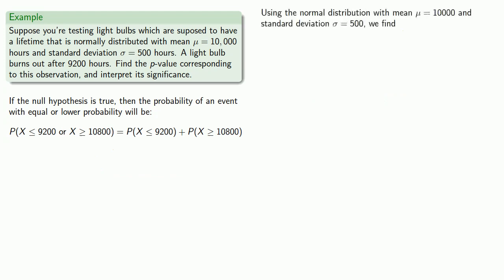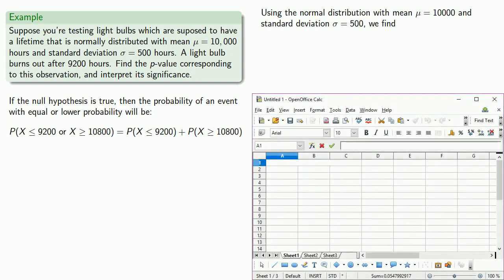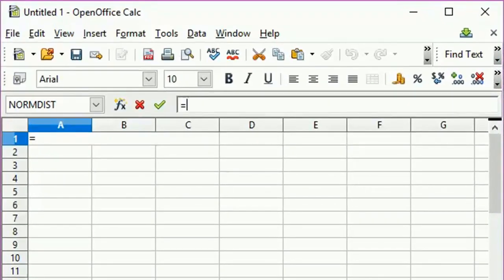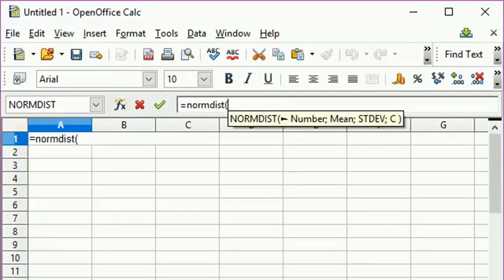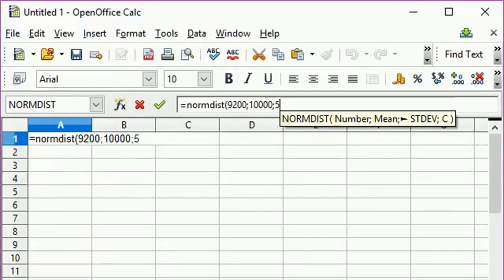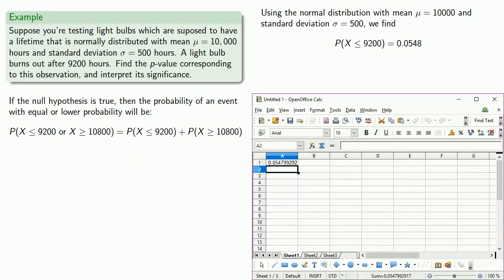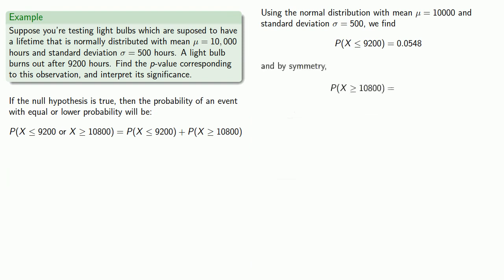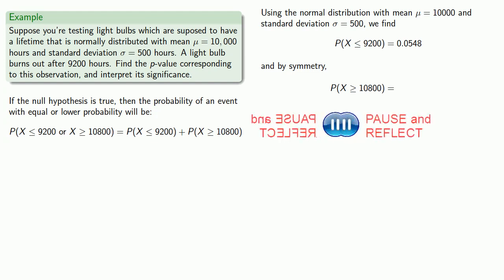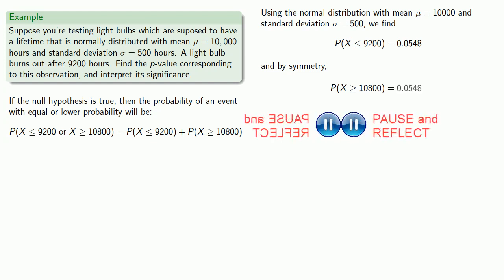We'll have the probability the light bulb lasts less than or equal to 9,200 hours, plus the probability the light bulb lasts more than or equal to 10,800 hours. Using the normal distribution with mean 10,000 and standard deviation 500, and our calculator, computing device, or random passerby, we find the probability the light bulb lasts less than or equal to 9,200 hours is 0.0548. And because our interval is symmetric about the mean, the probability our light bulb lasts longer than or equal to 10,800 hours is the same thing.